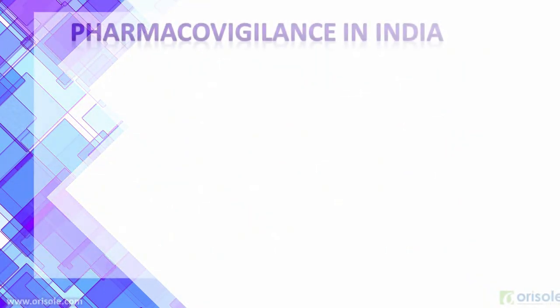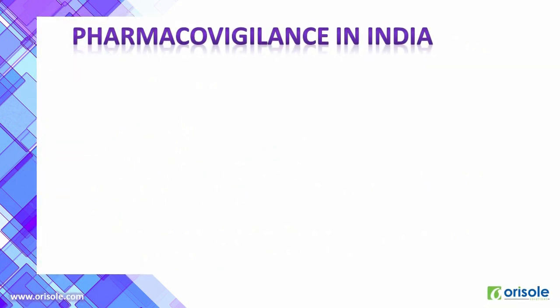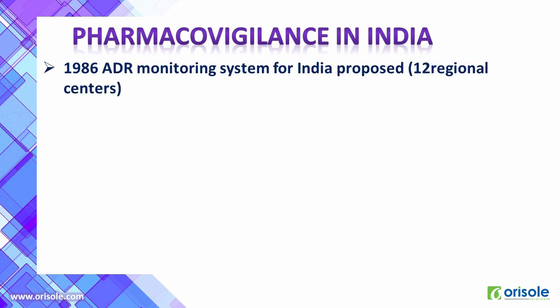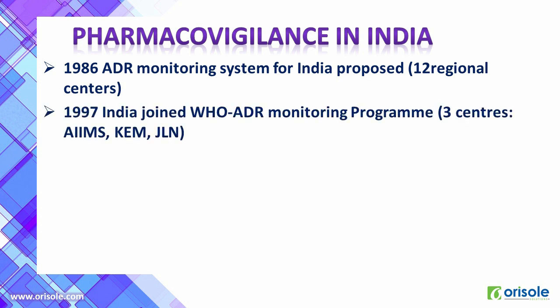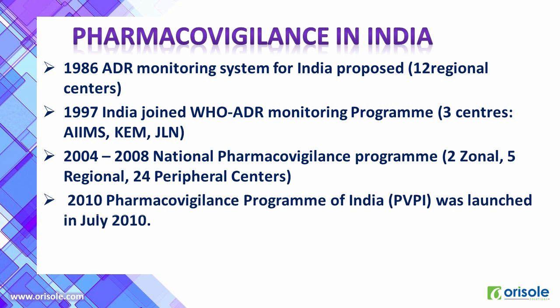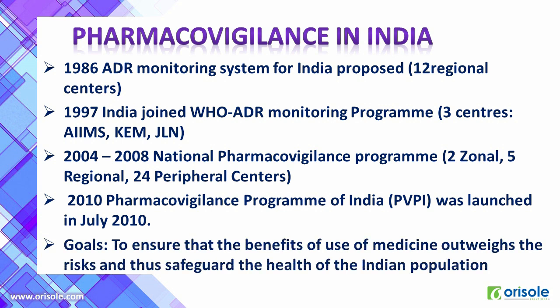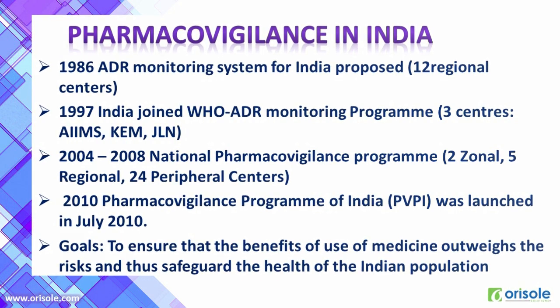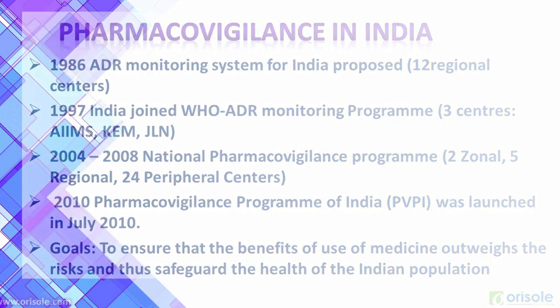Now let us see the scenario of pharmacovigilance in India. Before 1986, there was no ADR monitoring system in India. In 1986, an ADR monitoring system was first proposed with 12 regional centers. In 1997, India joined the WHO ADR monitoring program with 3 centers. Between 2004 and 2008, the National Pharmacovigilance Program with 2 zonal centers, 5 regional centers, and 24 peripheral centers was established in India. In July 2010, the Pharmacovigilance Program of India was launched, with the goal to ensure that the benefits of medicine use outweigh the risks and safeguard the health of the Indian population.